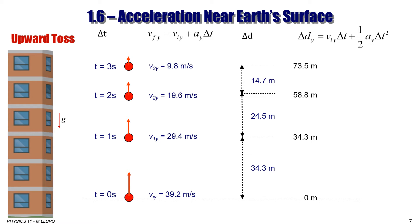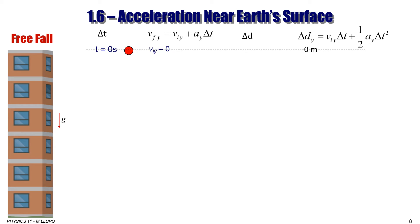After exactly 3 seconds, the velocity is 9.8 m/s and displacement reaches 73.5 m. After 4 seconds, the velocity decreases by another 9.8 m/s to reach zero, and the ball reaches its maximum height of 78.4 m. Remember these numbers: 78.4 m for maximum height and 39.2 m/s for initial velocity. After reaching maximum height, the ball stops for a fraction of a second and then falls back down.